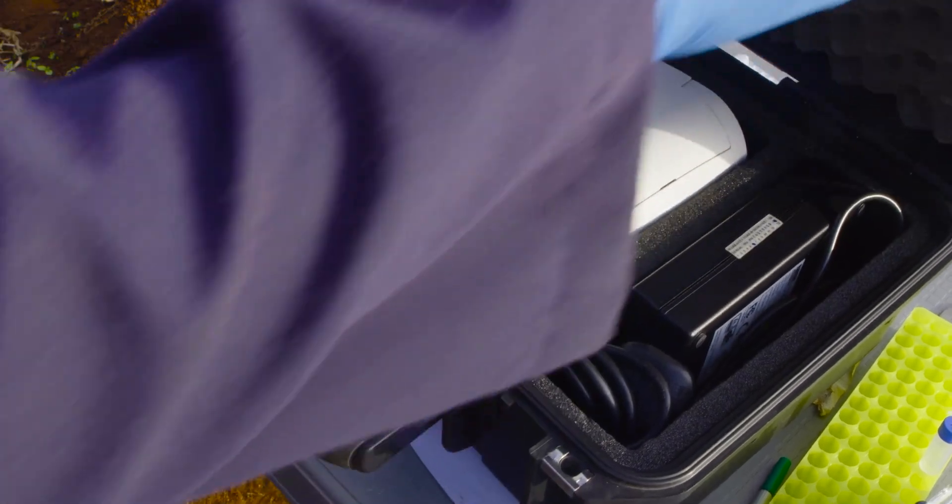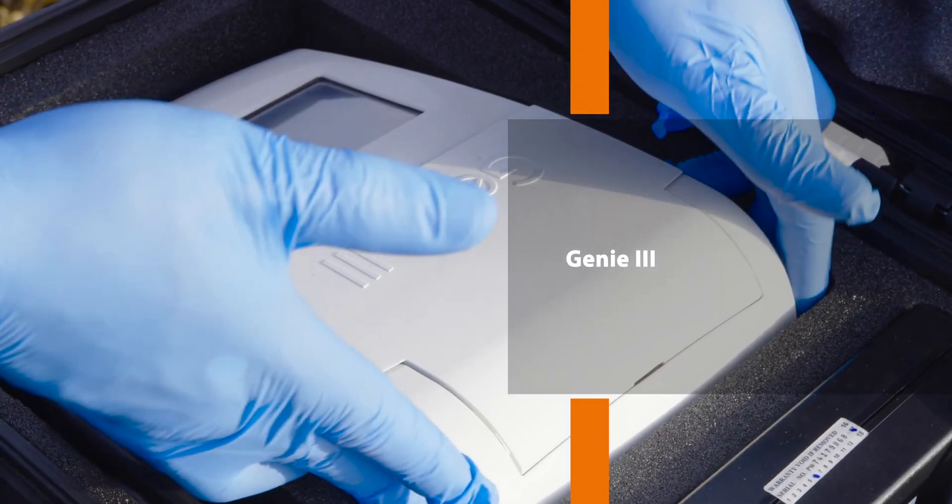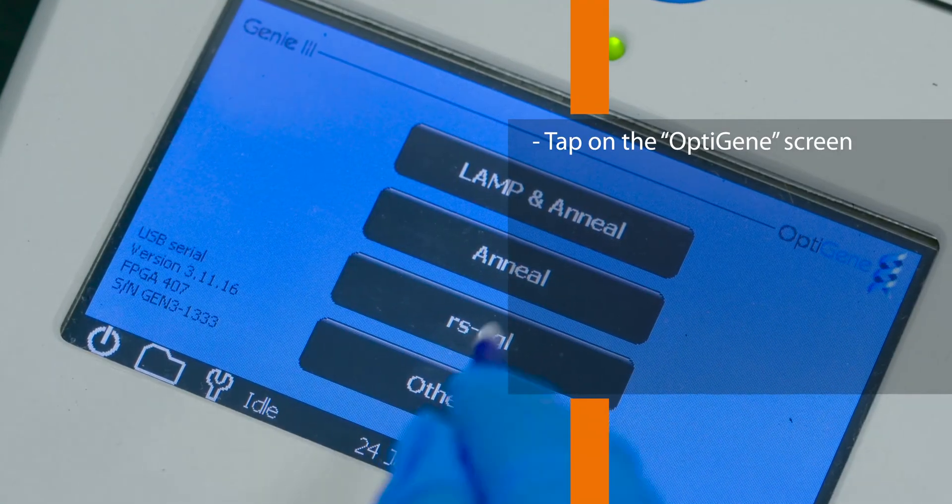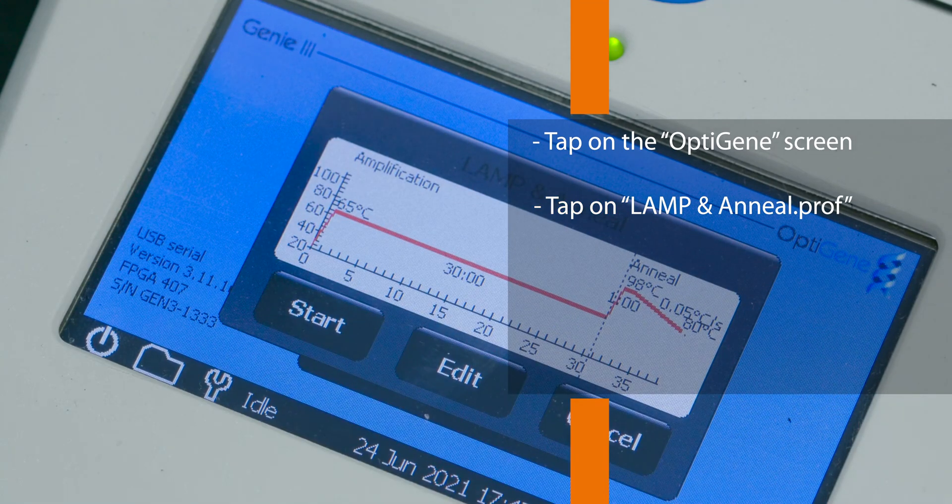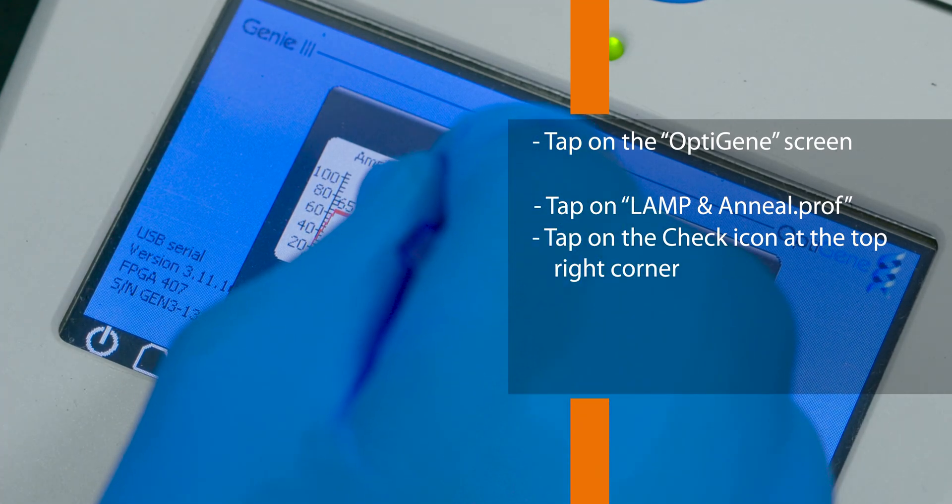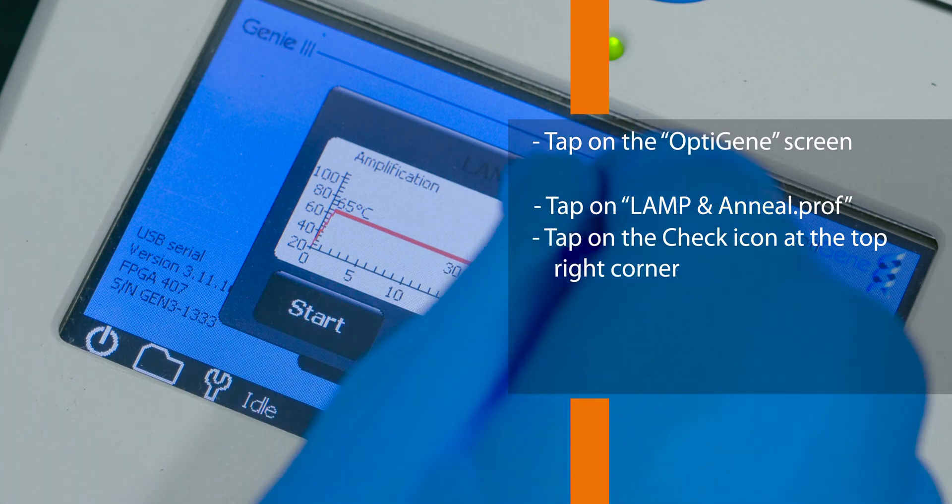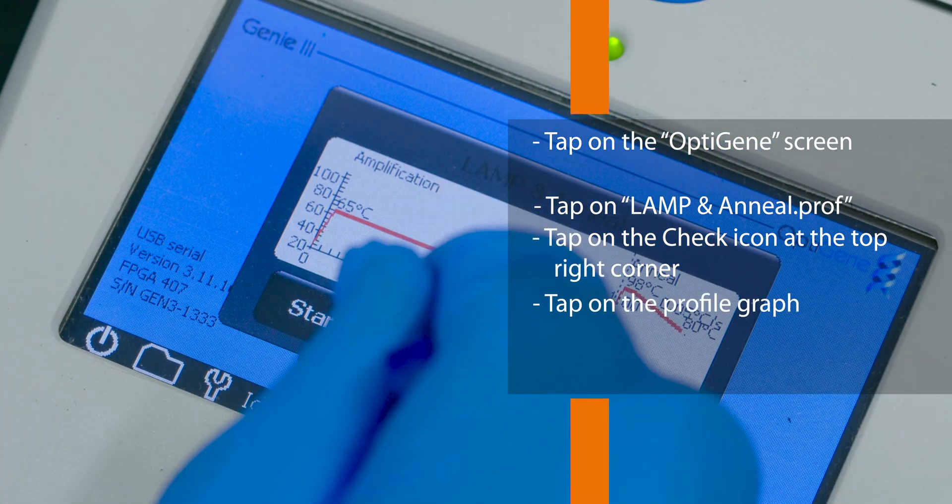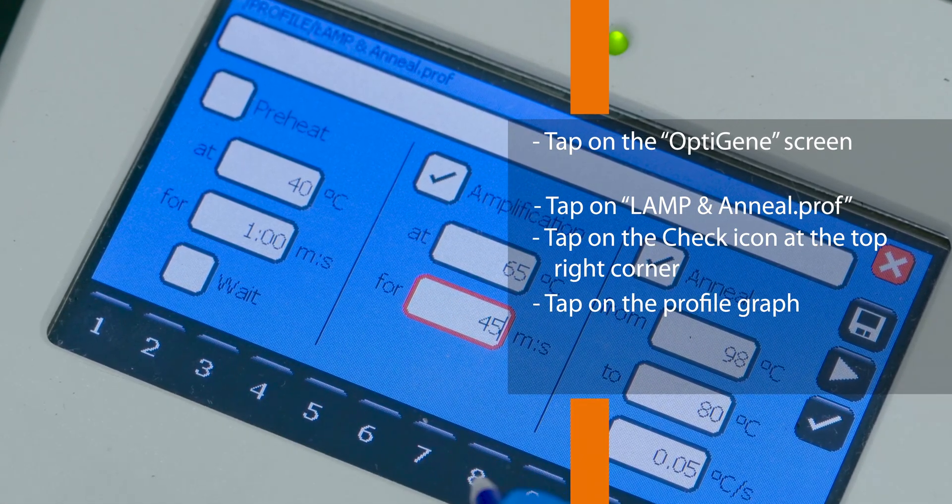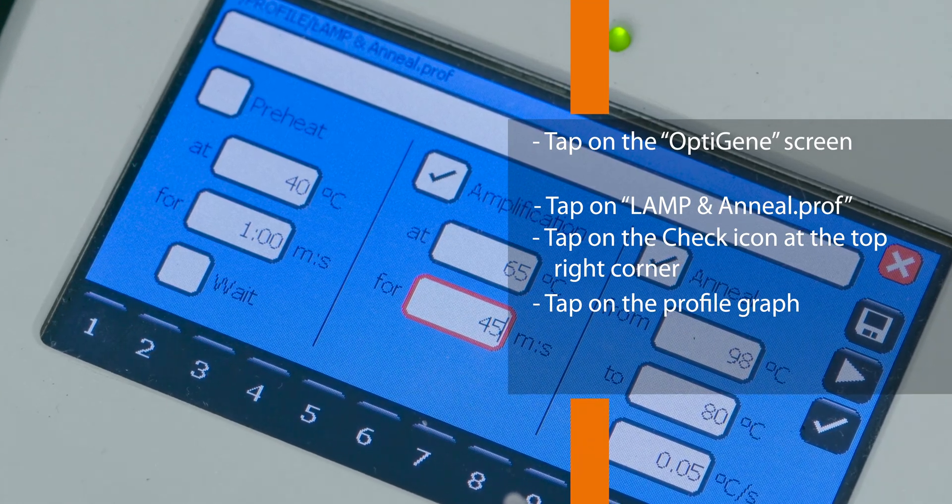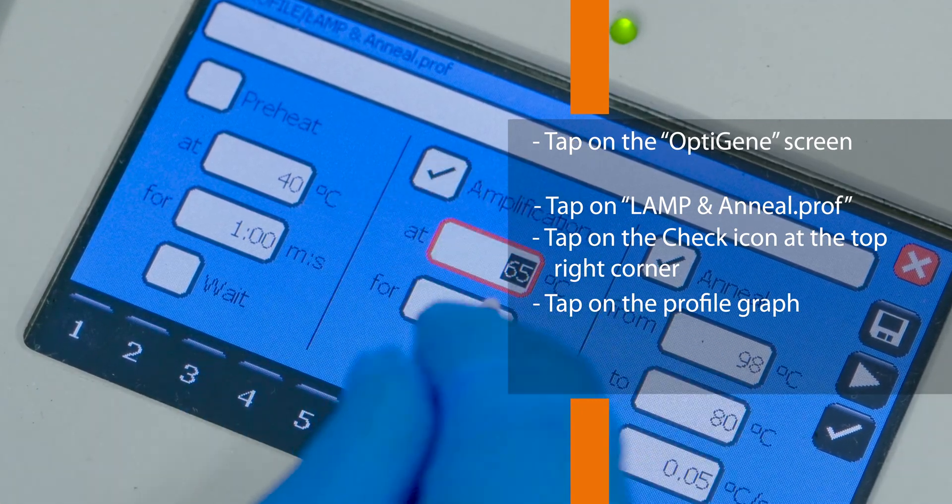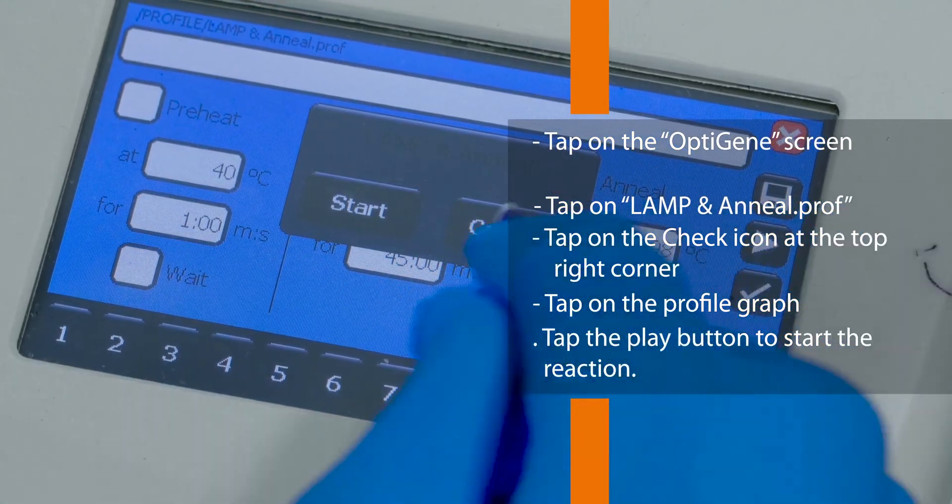Now, we'll share the steps to run a lamp assay on the Genie 2 and Genie 3 machines. Tap on the OptiGenie screen. Tap on Start. Tap on Lamp and Anneal.prof to write your own program as follows. Tap on the check icon at the top right corner. Select either of the A for the left or B for the heating block if using the Genie 2 instrument. Tap on the profile graph and set the amplification temperature at 65 degrees Celsius for Lamp 1 or 60 degrees Celsius for Lamp 2 but leave the anneal temperature at the default setting. Or tap on RSEGL. Tap the play button to start the reaction.